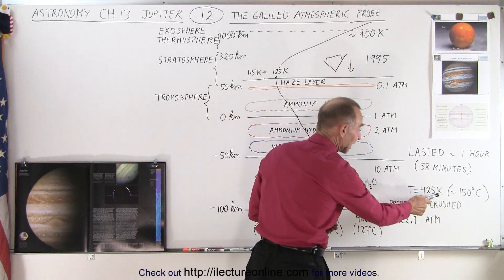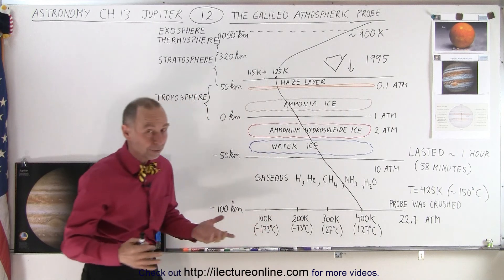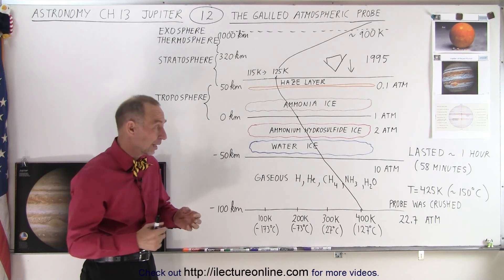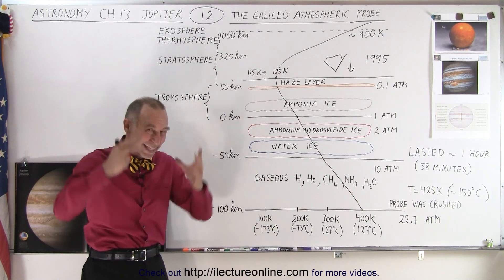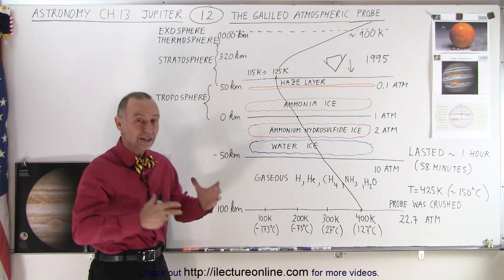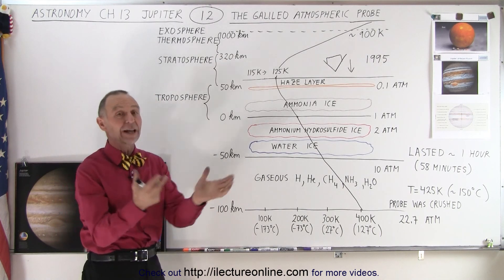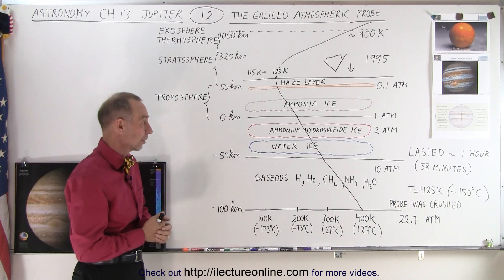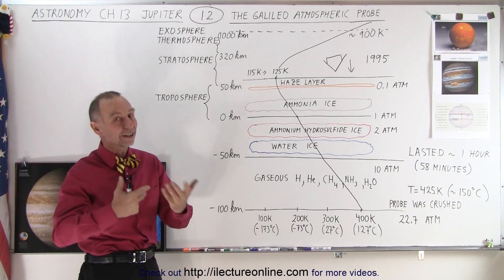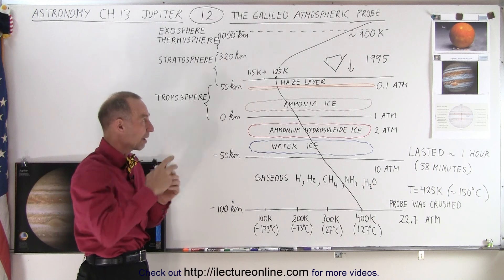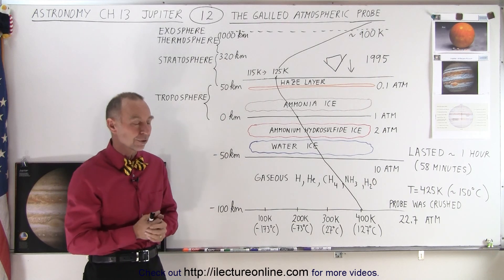The temperature it measured at the end was 425 Kelvin, that's about 150 degrees Celsius. So it was plunging through this very thick atmosphere, became very hot, the pressure was enormous at 22.7 atmospheres, and then it died. It no longer functioned and no longer sent any signals to the orbiting spacecraft, which would then relay back to Earth.